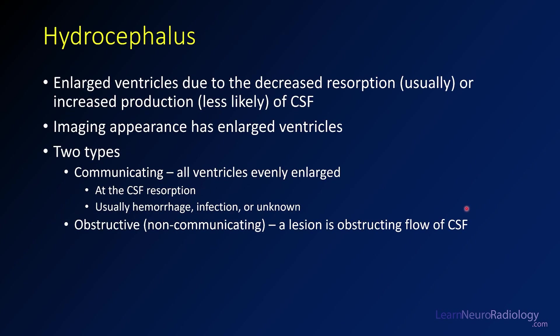The next pathology is hydrocephalus — enlargement of the ventricles, usually due to decreased resorption or blockage of CSF flow. It can be due to increased production such as with a choroid plexus tumor, but that's rare. The imaging appearance is enlargement of the ventricles: they'll be too big, have an abnormal contour, and may have edema around them. Two types exist: communicating hydrocephalus, where all ventricles are enlarged due to a CSF resorption issue most commonly from hemorrhage or infection; and obstructive or non-communicating hydrocephalus, where a lesion blocks CSF flow at the foramen of Magendie, cerebral aqueduct, or fourth ventricle.